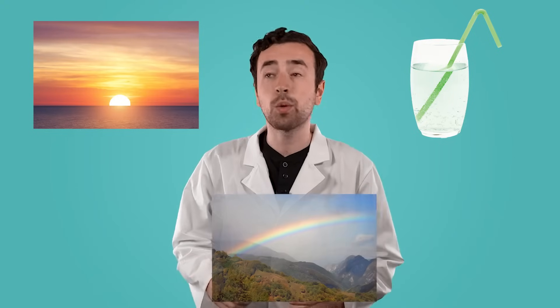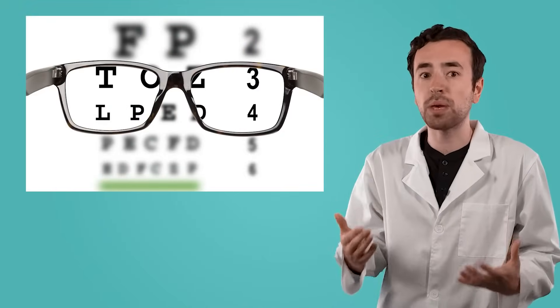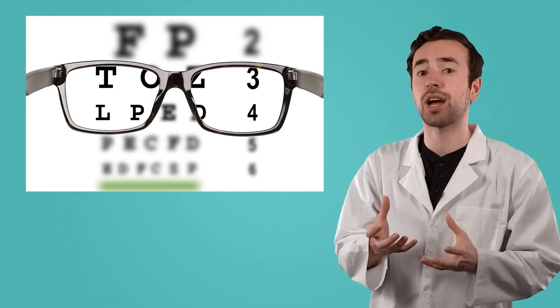Refraction is the reason that this straw looks broken, why the sun might look particularly large at sunset, and why you might see a rainbow across the sky after a rainstorm. Refraction is also how glasses help people with a vision impairment to see clearly. Their unique shape of the lenses bends the light shining into the wearer's eyes. So, whether it's bouncing with reflection, bending with refraction, or just passing through, it is light energy that allows the world around us to be seen.